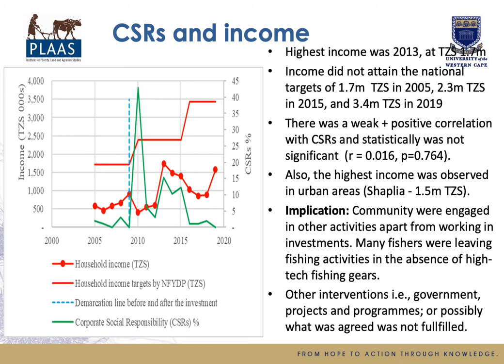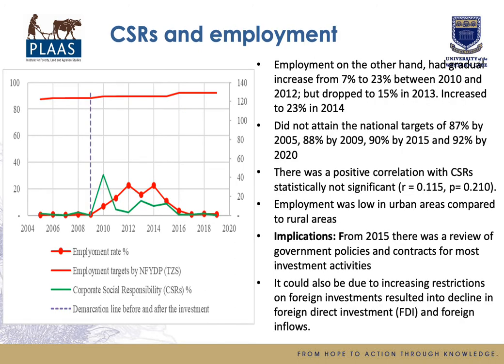Possibly there were other interventions from government or development partners. On CSRs and employment: employment had a gradual increase before investment, but dropped after investment, then peaked again in 2014. It did not attain national targets, with positive correlations with CSRs but statistically not significant. Employment was low in urban areas compared to rural areas. In 2015, a review of government policies and contracts for investment activities likely reduced community employment, and increasing restrictions on foreign investment led to a decline in foreign direct investment, affecting local income.